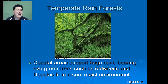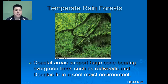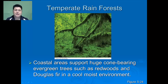We also have a fourth class of forest called the temperate rainforest, like we'll see in Washington State or Oregon. These are found on the coast and they support huge cone-bearing evergreen trees such as redwoods and Douglas firs in this very cool, moist environment.